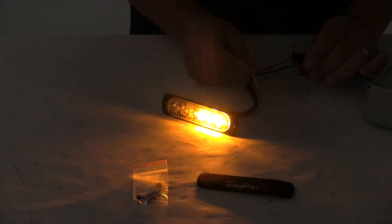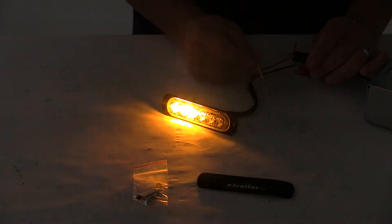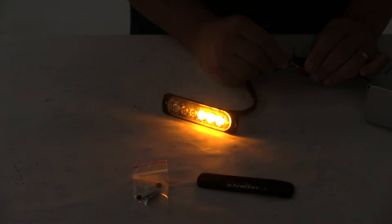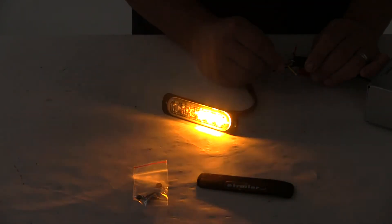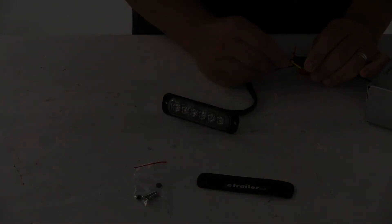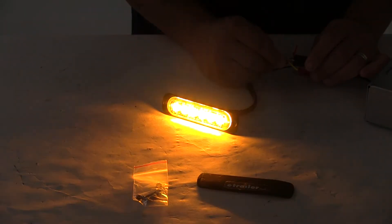To change the flash pattern, you momentarily touch the yellow wire to power. And every time you do that, it'll switch the flash pattern. You have a lot of flash patterns to choose from so you can find which one works best for your application.